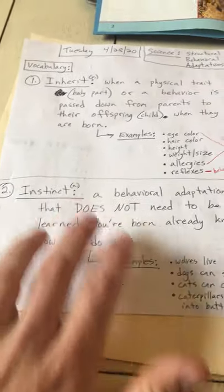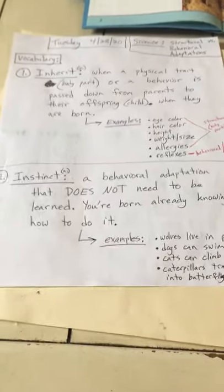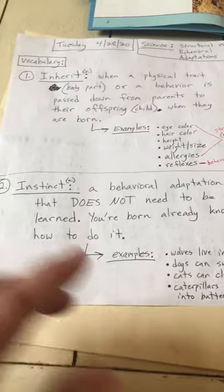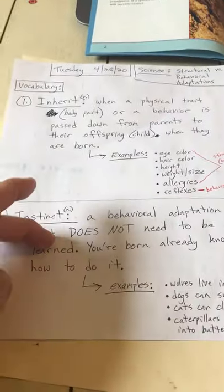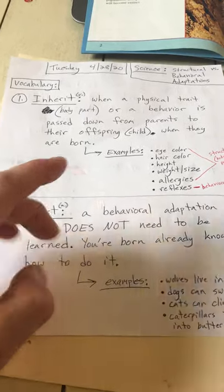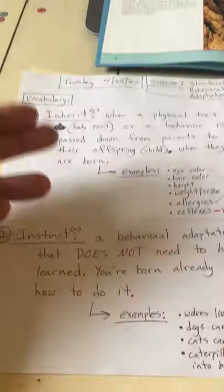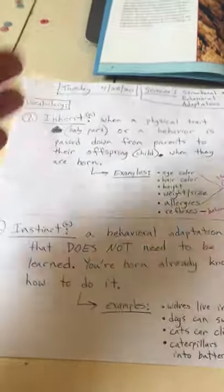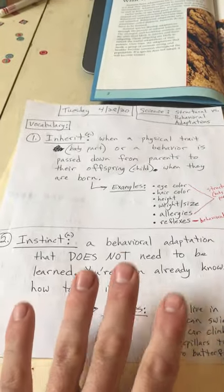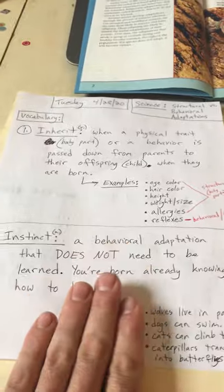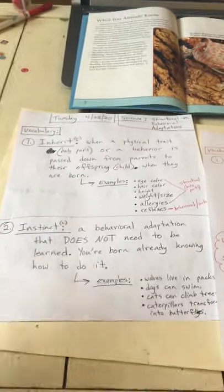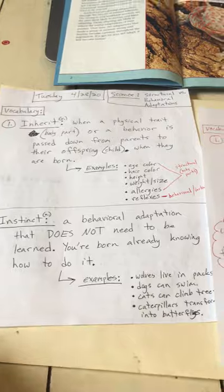Number two was instinct. That's a noun. It's a behavioral adaptation that does not need to be learned. So you inherit instincts. Instincts are behaviors that you get from your parents — you do not need to learn them. You can do them no matter what, because you're born already knowing how to do them.